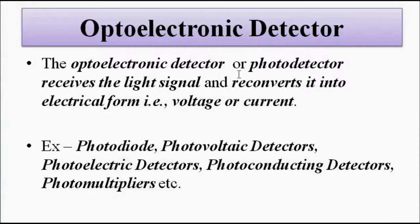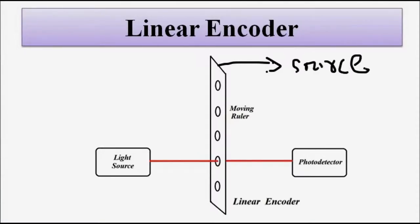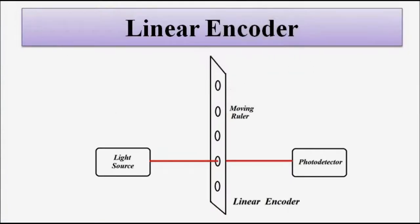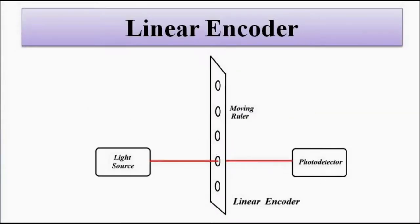The photo detector or optoelectronic detector receives the light signal and reconverts it into usable electrical form — voltage or current. Commonly used photo detectors include photo diodes, photovoltaic detectors, photoelectric detectors, and photo multipliers. This is for linear movement. The moving ruler is connected to the source of displacement, and when that point moves, the ruler also moves along with it, so the light signal will either get blocked or transmitted, producing an electrical signal.